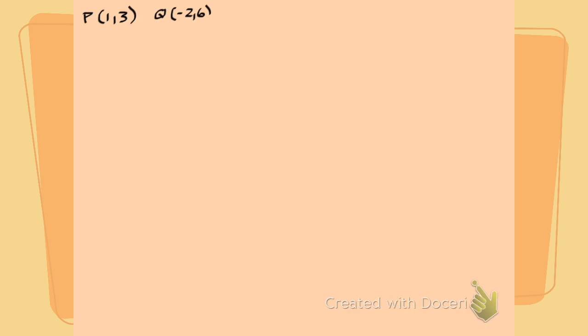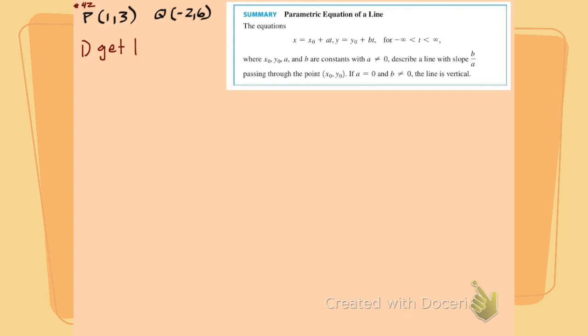The parameterization of a line through two points. We have these two points. I point out that your book does these. They're not magic. We can go get them some other day.